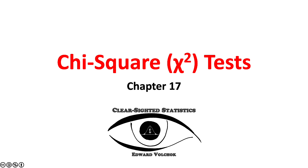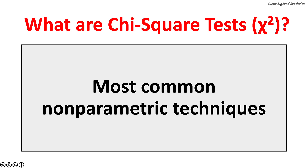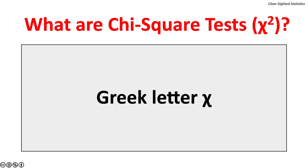Welcome to our lecture on Chi-square tests. This lecture covers Chapter 17 of Clearsighted Statistics. Chi-square tests are the most common nonparametric tests. Unlike parametric tests, nonparametric tests make no assumptions about the population parameters or how the population data are distributed.